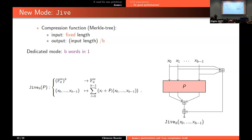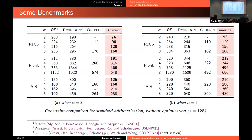Finally, here are some benchmarks. We compare Anemoi with three other primitives: Rescue-Prime, Poseidon, proposed two or three years ago, and also Griffin, which will be presented in the next session. We consider different proof systems including R1CS and two others — Plonk and R. The goal is to minimize the number of constraints. For example, for R1CS with two branches, Anemoi has 76 constraints. We are better than Rescue-Prime and Poseidon for R1CS and Plonk, and quite on par with Griffin. If you increase the number of branches, then Griffin is going to be better.